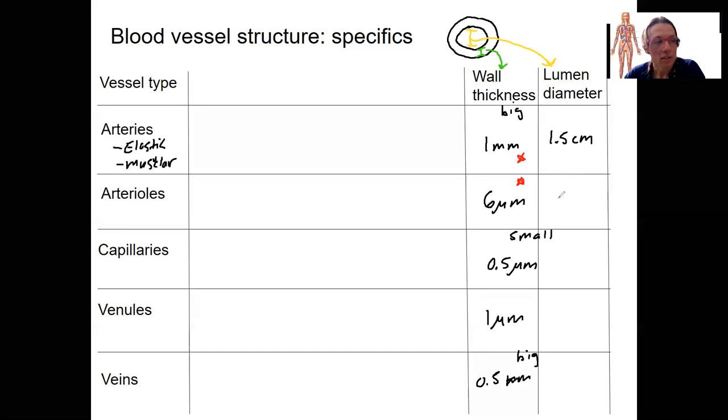Arterioles, we're looking at, you don't need to know this exact number, 37 micrometers is what I have written down. So micrometers, a lot smaller. And again, there's progression to get there. Capillaries, nine micrometers. Interestingly, that's just a little bigger than a red blood cell. So red blood cells are between four and seven micrometers. So red blood cells can just barely fit through capillaries. Isn't that convenient? Venules are going to be back big again, 20 micrometers.